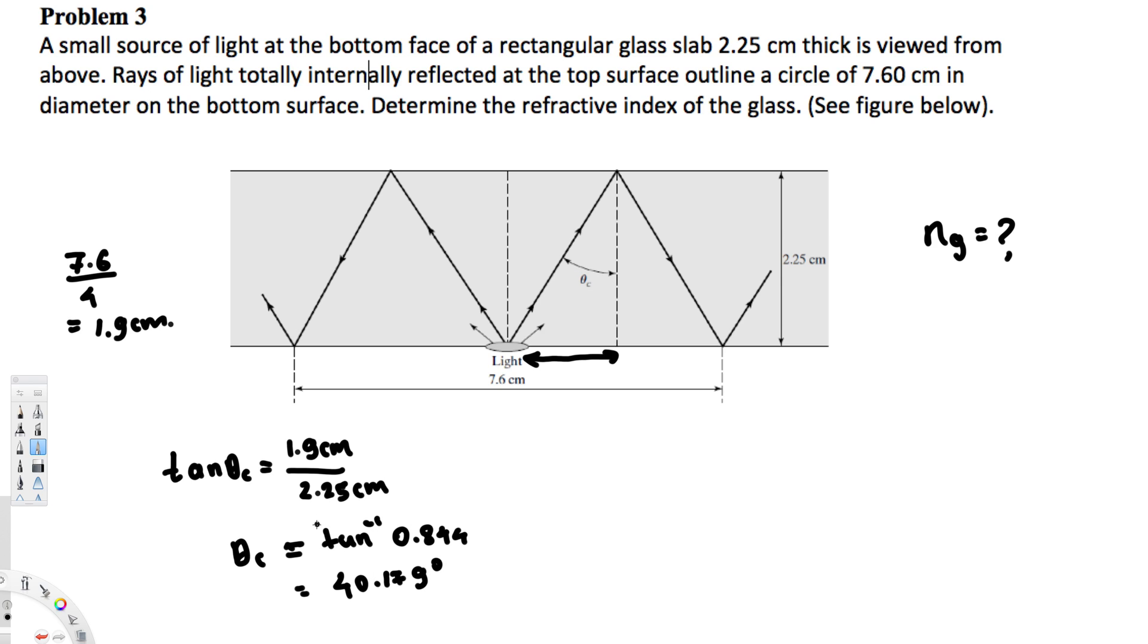So this is the angle of theta_c. Now we have the critical angle. Since we know the critical angle, it's easy to find the index of refraction, because index of refraction is 1 over sine theta_c. So if we plug 1 over sine theta_c, that's going to give us the index of refraction.